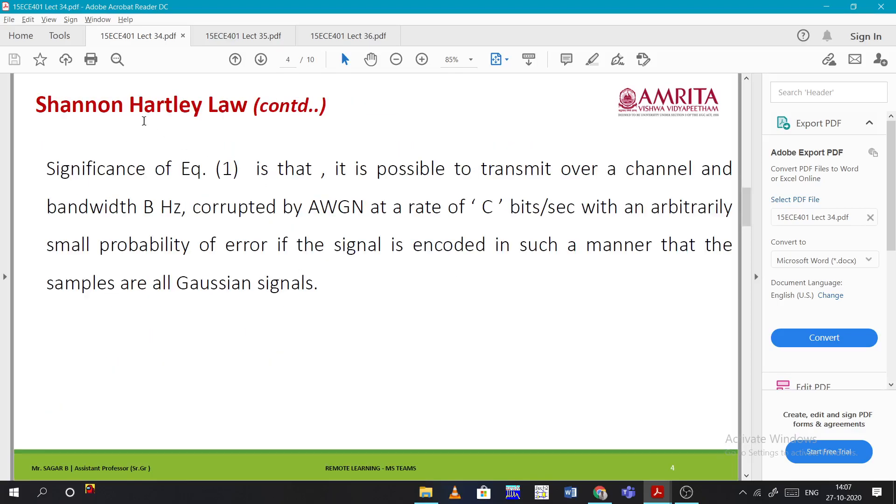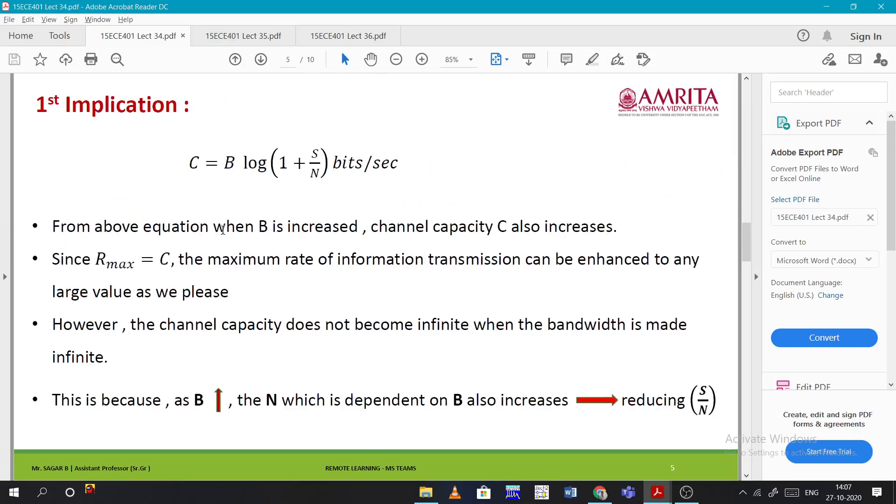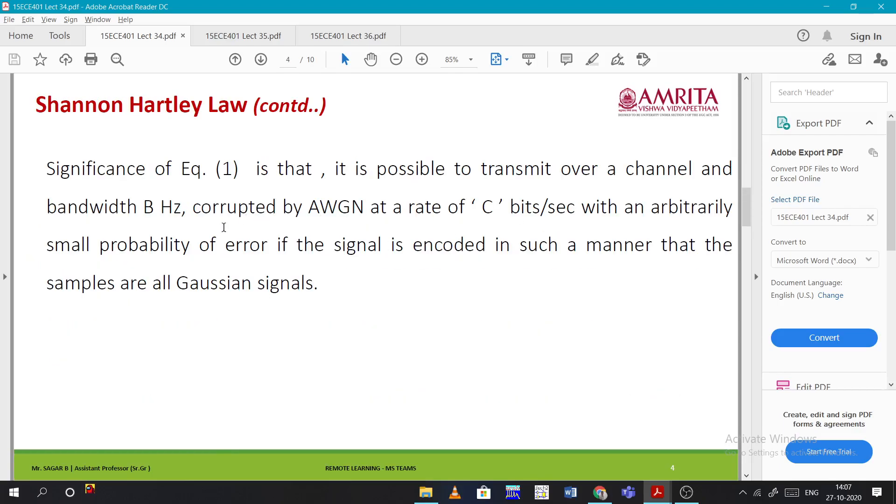Shannon-Hartley law says that it is possible to transmit over a channel with bandwidth B corrupted by AWGN at a rate of C bits per second, with an arbitrarily small probability of error.